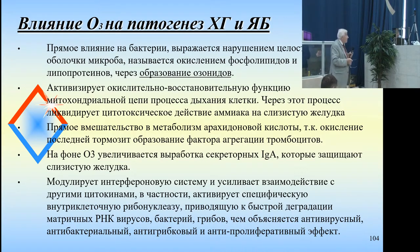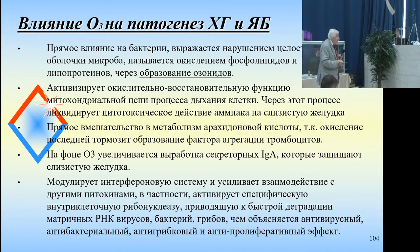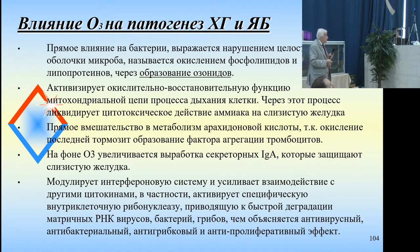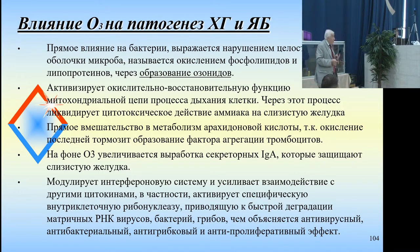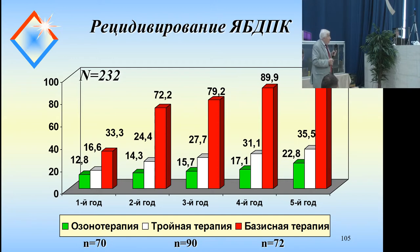As for the pathogenesis of chronic gastritis and ulcers: the direct effect on bacteria is realized through membrane microbe phospholipid oxidation. Ozone activates the oxidation-restoring function of the mitochondrial respiratory chain. Through this process, it liquidates the cytotoxic activity of ammonia on the stomach membrane and produces direct intervention into the metabolism of arachidonic acid, since acetylation is involved.